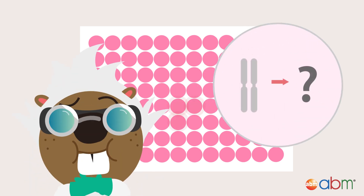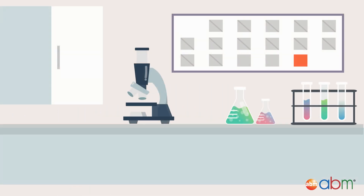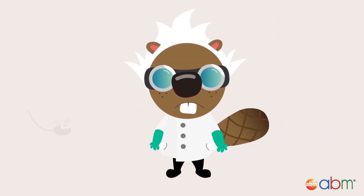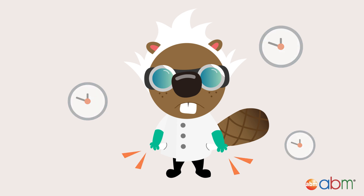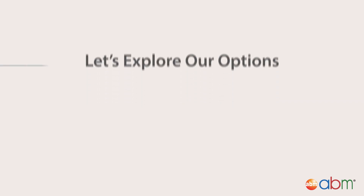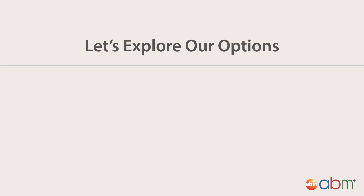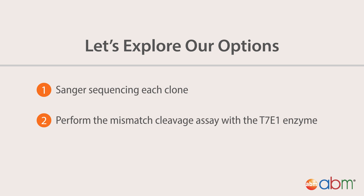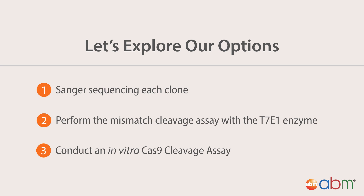How do you determine what types of edits your cells have? Your deadline is coming up and you need results fast. You're on a tight budget and the clock is ticking. You need a way to quickly and efficiently screen for biallelic knockout clones. There are three potential strategies: first, Sanger sequencing each clone; second, perform the mismatched cleavage assay with the T7E1 enzyme; or three, conduct an in vitro Cas9 cleavage assay.